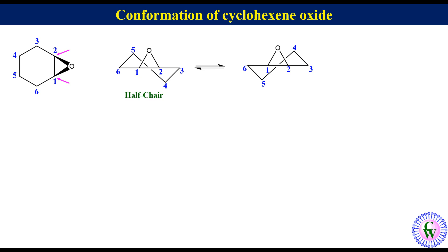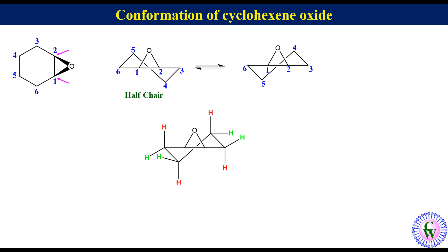In cyclohexene oxide, the hydrogen atoms on C3, C4, C5, and C6 adopt two types of orientations, like in the case of cyclohexene, but they are not quite oriented in the same way. These two orientations are called pseudo-axial and pseudo-equatorial.